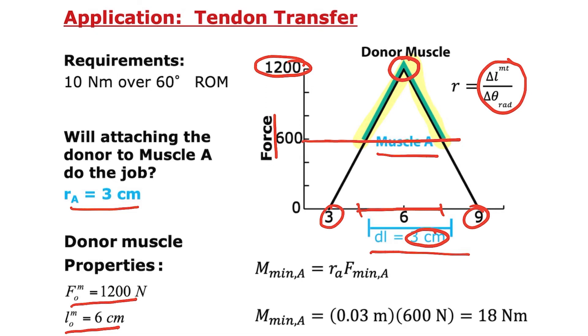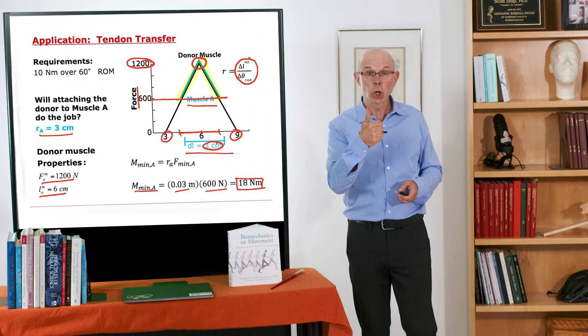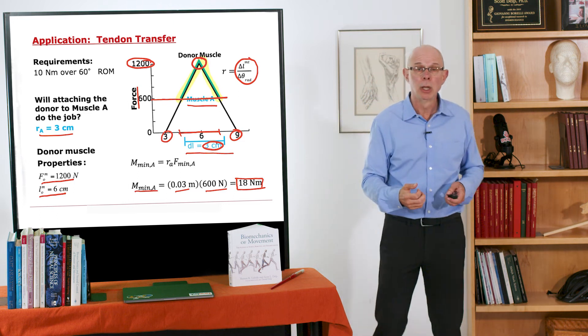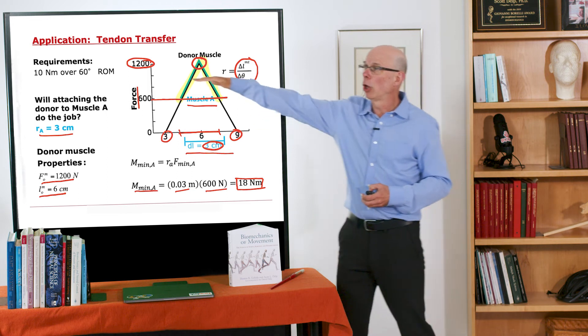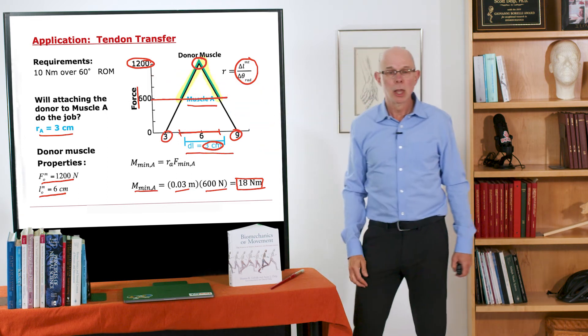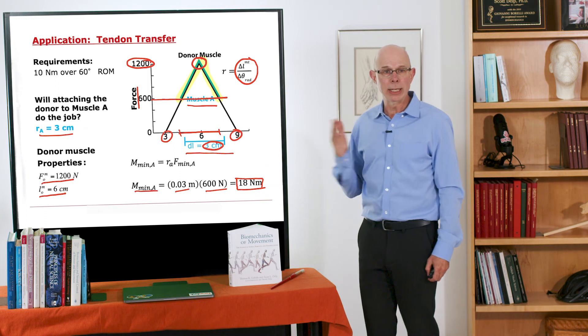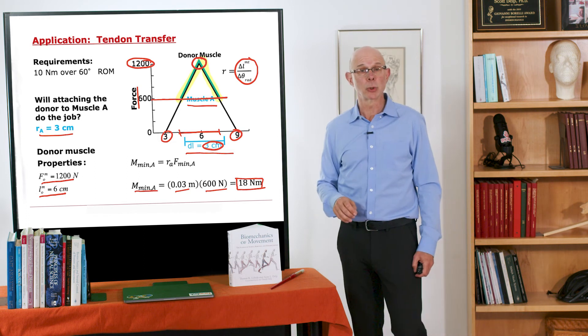Now let's check it out to see if it meets our needs. So the force minimum times the moment arm is going to be this 3 centimeter moment arm, so it's .03 meters, times 600 newtons. That's 18 newton meters. Pretty good. We'll get at least 18 newton meters over this whole 60 degree range of motion. Remember we only needed 10 newton meters over the 60 degree range of motion. So at donor site 1, yes it does the job. The minimum is 18, all we need is 10. Check. That would be a great surgery to do.